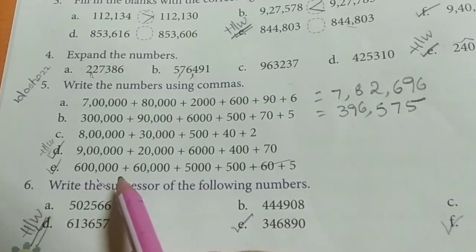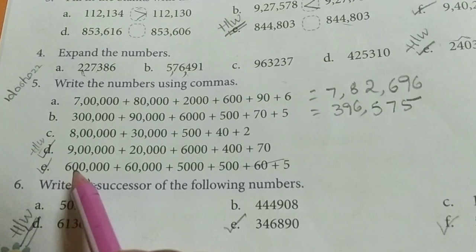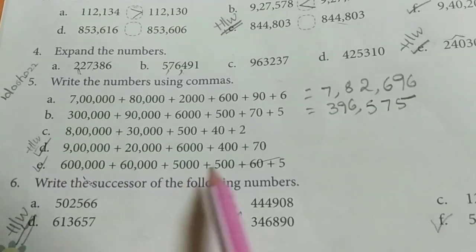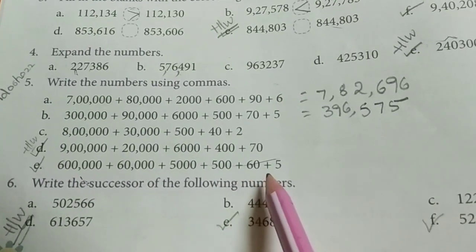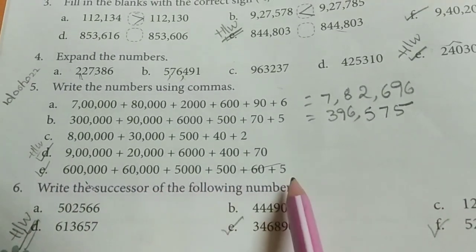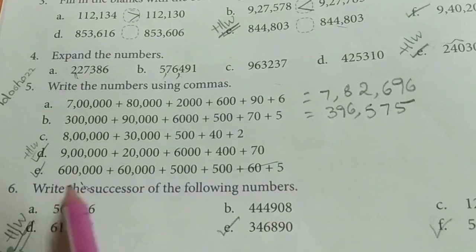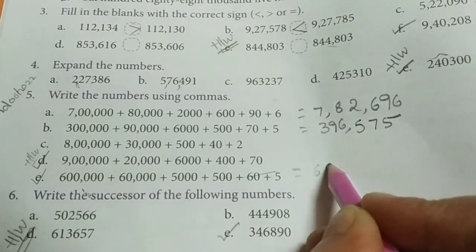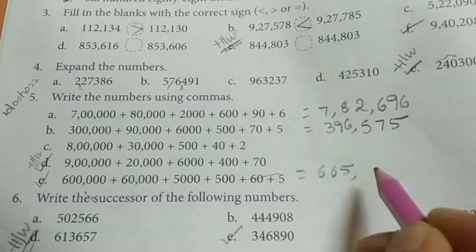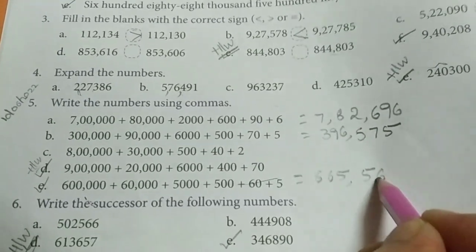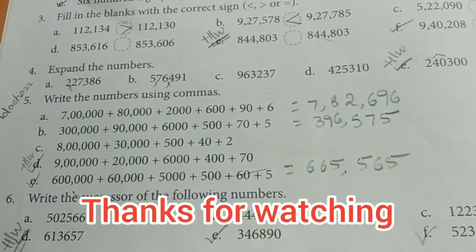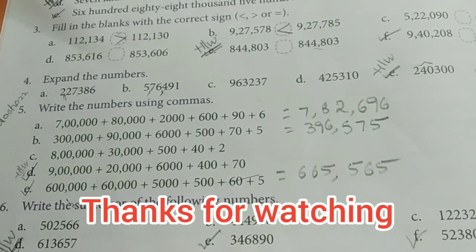one more sum also is there last one, E, see this one 600,000 60,000 5,000 560 plus 5 so this is in international system how can you write this one 665,000 565 got it remaining you have to solve try to solve the answers thank you,